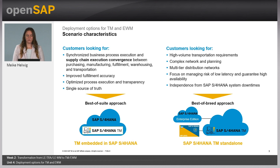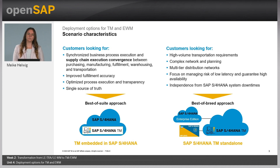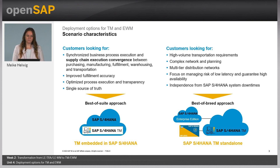If you go for a TM standalone or side-by-side deployment option, you are mainly a customer for high volume — meaning you have a lot of transportation requirements. For example, if you're a big company with many different business units and one central logistics department responsible for all transport planning processes, consolidating demands from several business units onto the same trucks or ocean shipping liners. You also have a more complex network and planning processes, like a central planning organization.